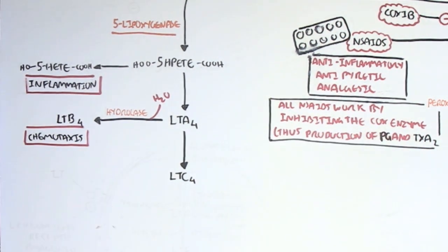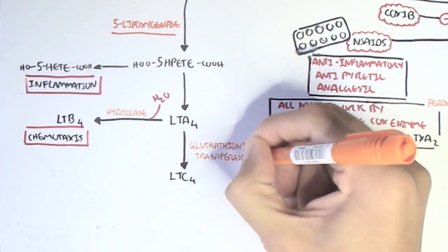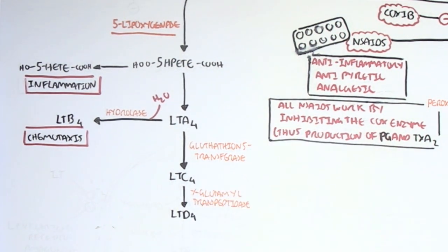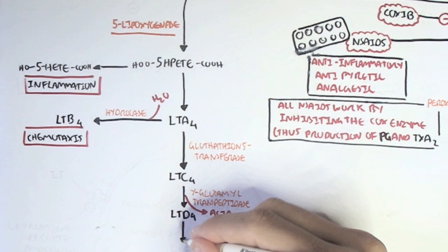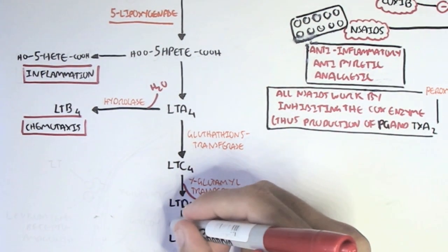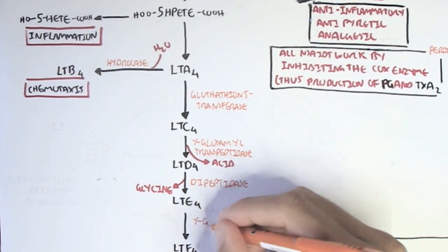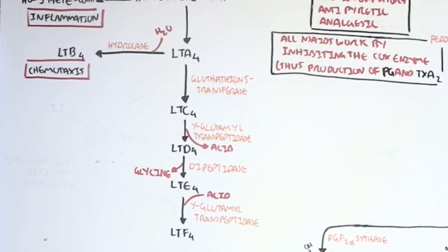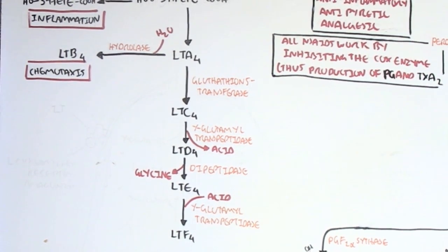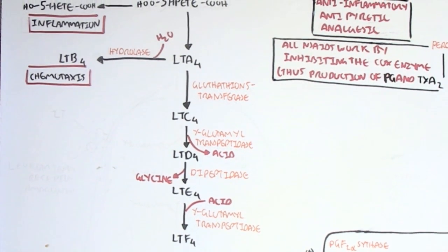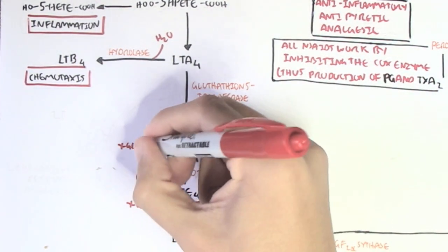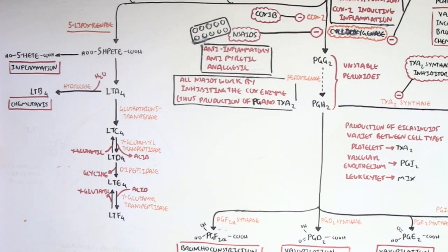Leukotriene A4 can also convert to leukotriene C4 by the enzyme glutathione S-transferase. Leukotriene C4 can then convert to leukotriene D4 by gamma-glutamyl transpeptidase and an acid was removed. Then leukotriene D4 can convert to leukotriene E4 by the enzyme dipeptidase removing a glycine group. Leukotriene E4 can then finally convert to leukotriene F4 by the same enzyme gamma-glutamyl transpeptidase and acid is added in this case. So these are all leukotrienes. Of course, some of these can convert back to its previous one such as leukotriene F4 can convert back to leukotriene E4 by removing a gamma-glutamyl group and then leukotriene D4 can convert back to leukotriene C4 by adding a gamma-glutamyl group.